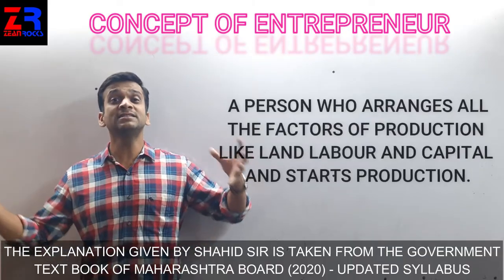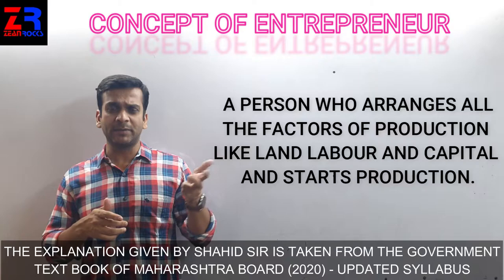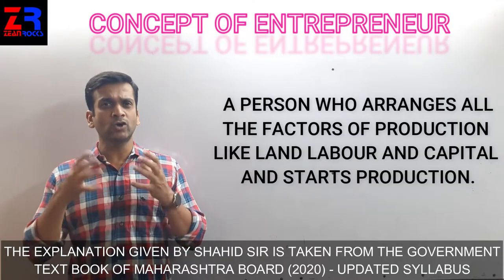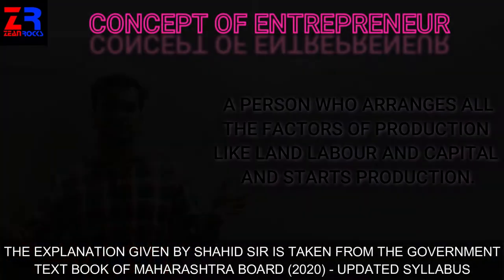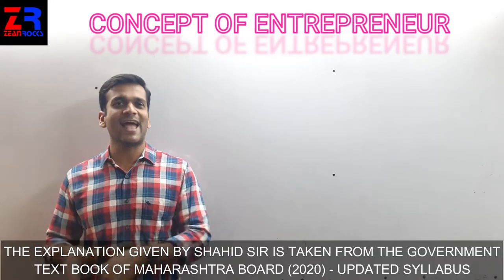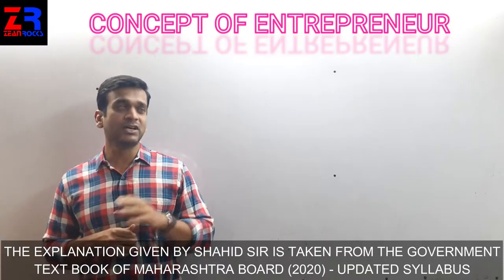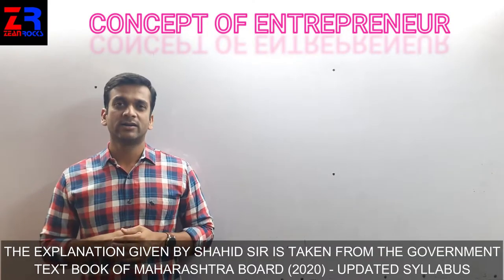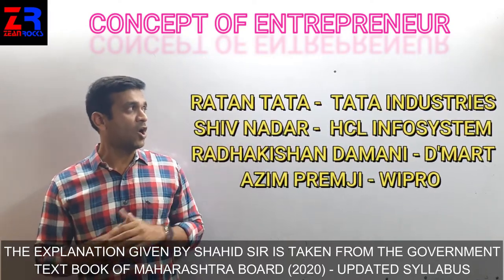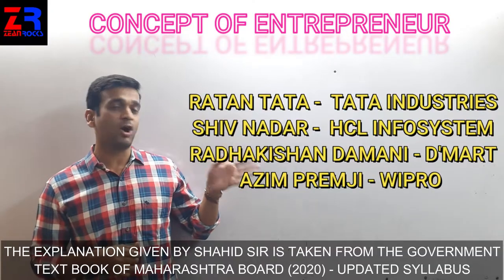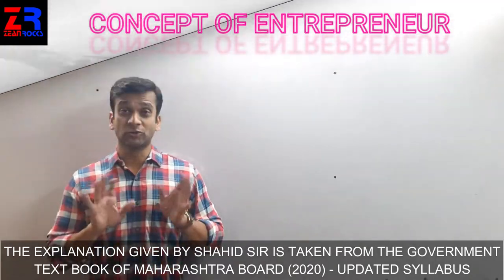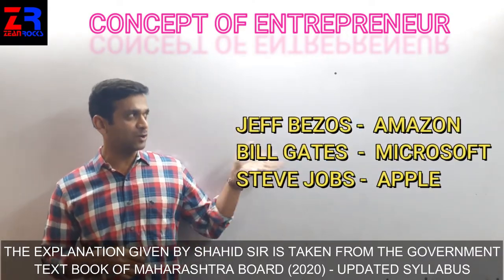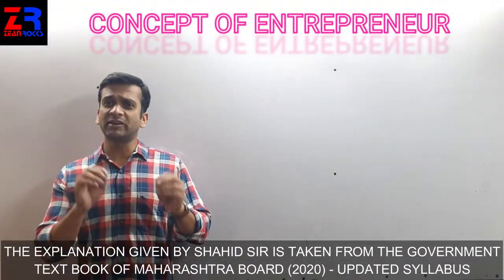An entrepreneur is the person who arranges all the factors of production — land, labor, and capital — and then starts the production activity. They are people who have the courage to share and offer their ideas, goods, and services to the entire world. The best example of an entrepreneur who is an idol of many Indians is Mr. Dhirubhai Ambani of Reliance Industries. Other examples include Ratan Tata of Tata Industries, Shiv Nadar of HCL Infosystems, Radhakishan Damani of DMart, and Azim Premji of Wipro. Top global entrepreneurs include Jeff Bezos of Amazon, Bill Gates of Microsoft, and Steve Jobs of Apple.